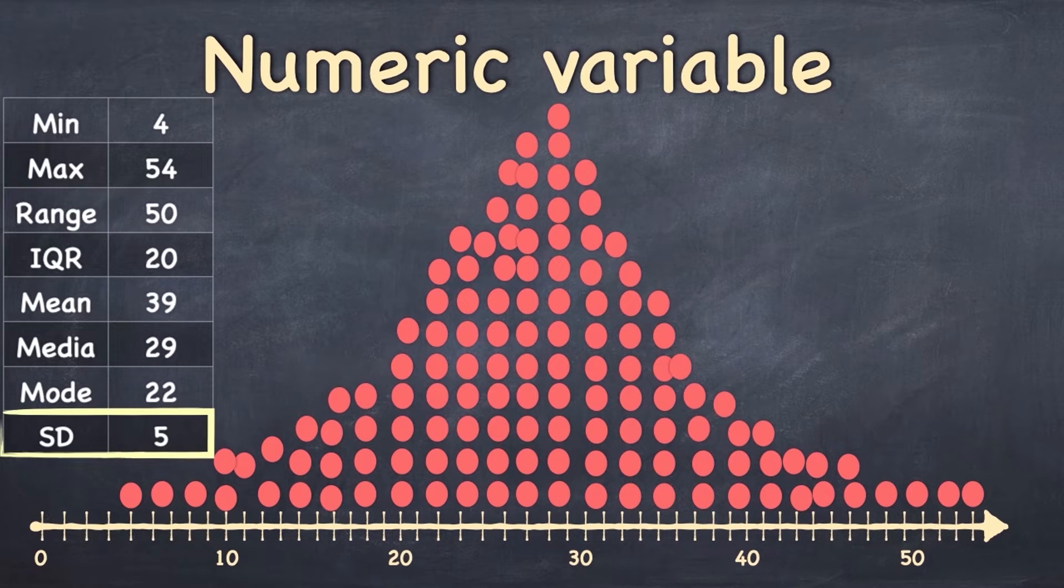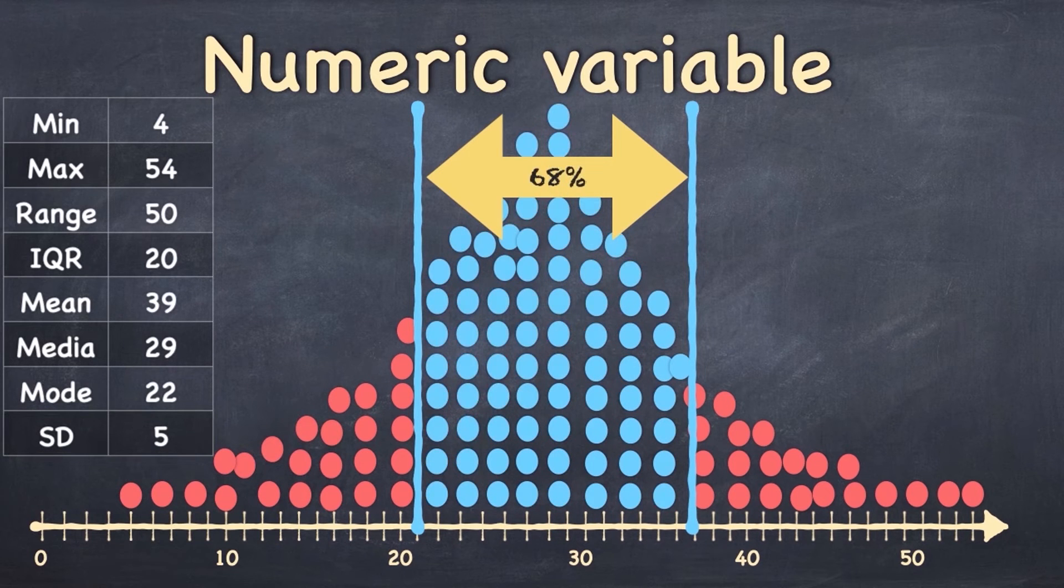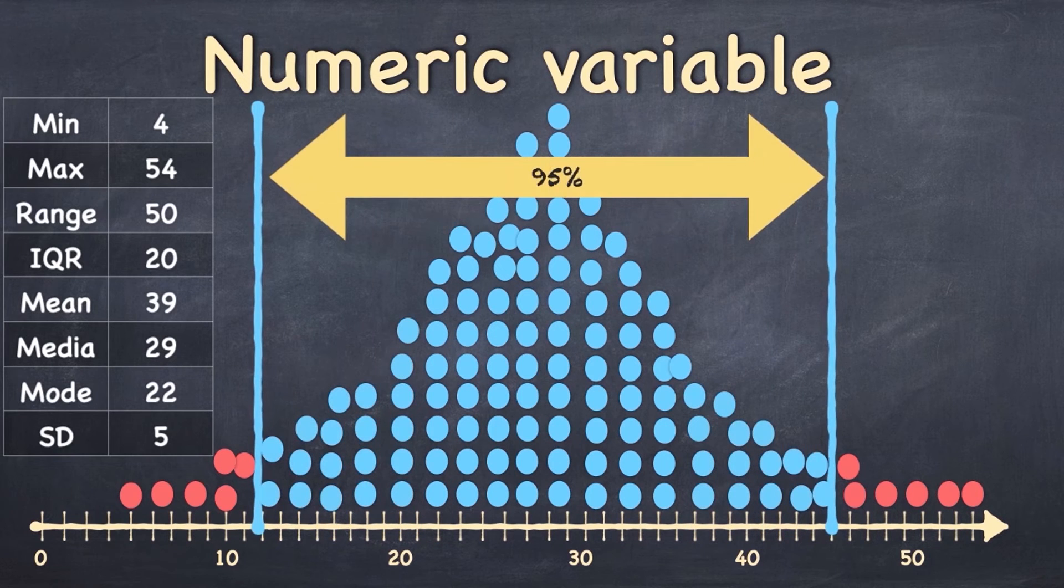And finally, the standard deviation tells us about the average distance from the mean. In other words, how spread out the data is. So, if this is the mean, then one standard deviation on either side of that is the average distance of the observations from the mean. And it turns out that if your data is normally distributed like this is, then about 68% of all of the observations will occur within one standard deviation on either side of the mean. And about 95% will be within two standard deviations.